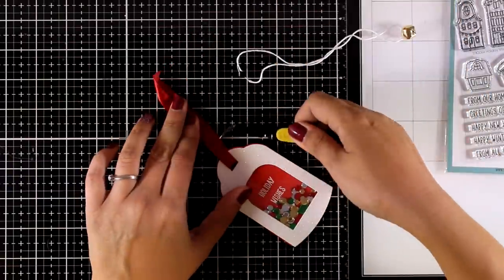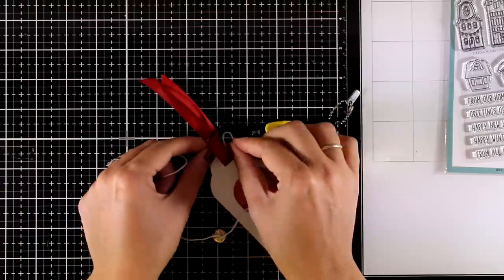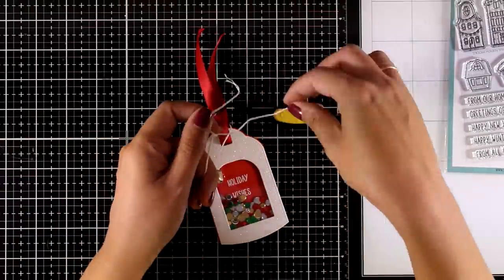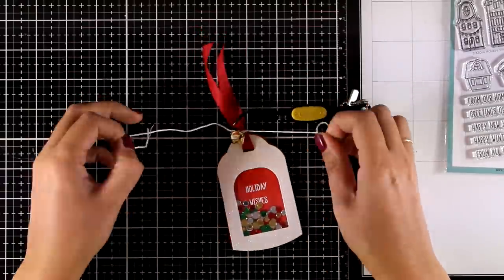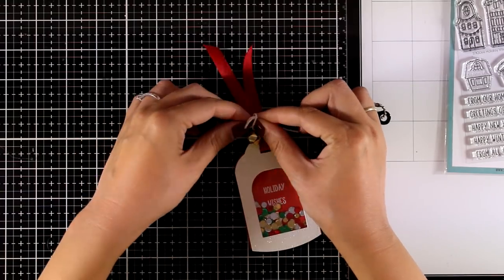All I need to do is to embellish it a little bit more. I'm adding some red ribbon and I'm also going to wrap it around with this floss and I'm adding also a little gold jingle bell.